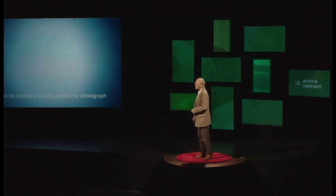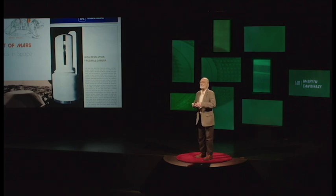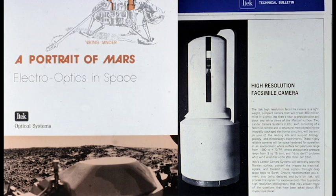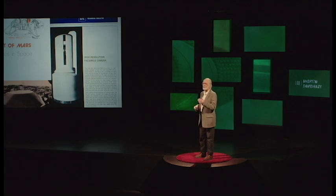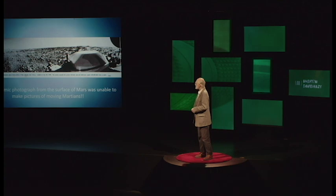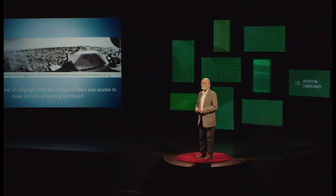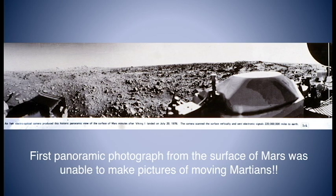Now, a significant achievement of these cameras was when they were launched on a Viking lander on Mars, and they were tasked with making a photograph of the landscape. Notice that slot on that box. That is the slot through which the camera looks at the scene. It makes a picture of a line, indexes, make another line, and so on. And eventually, you end up with a 360-degree view of the surface. The only problem was that these cameras could not make pictures of moving Martians. If you're going to spend a billion dollars to send a rocket there, you'd like to end up with pictures of Martians if they're there. Well, this camera couldn't really do it very well.